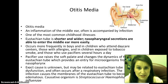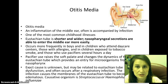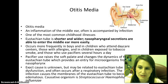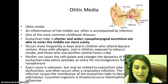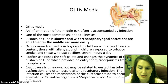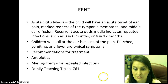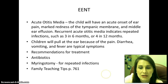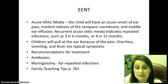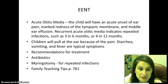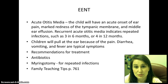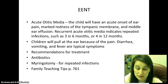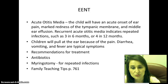Otitis media often occurs after a respiratory infection — all the extra secretions a child has just get backed up there. The infection often causes the membranes of the Eustachian tube to become edematous. Usually the organism that causes it is going to be streptococcus or H. influenzae. The child may have an acute onset of ear pain marked by redness of the tympanic membrane and middle ear effusions. Recurrent otitis media indicates repeated infections — more than 3 in 6 months or 4 in 12 months — and we might look at placing tubes in their ears.